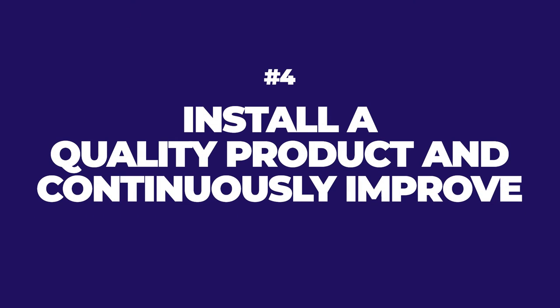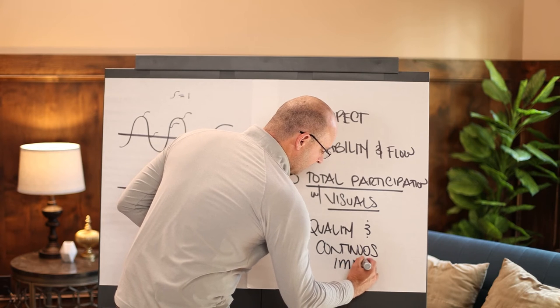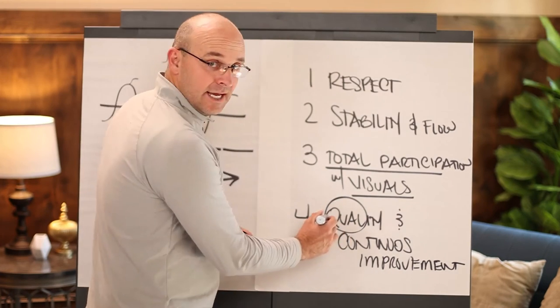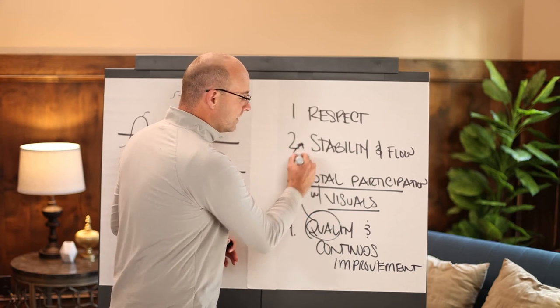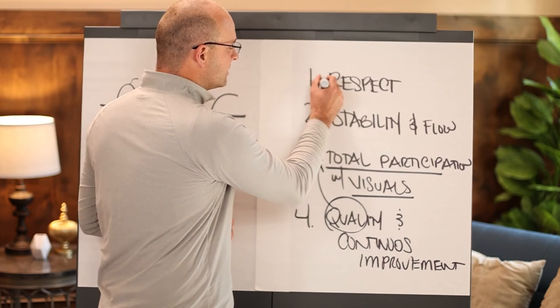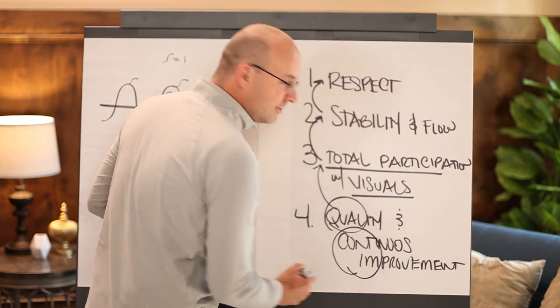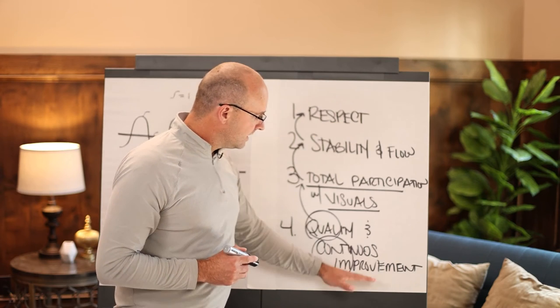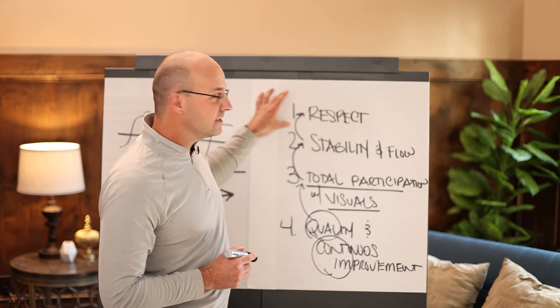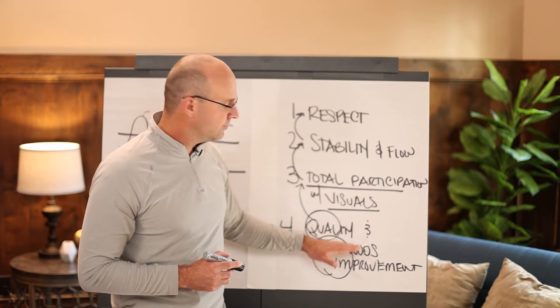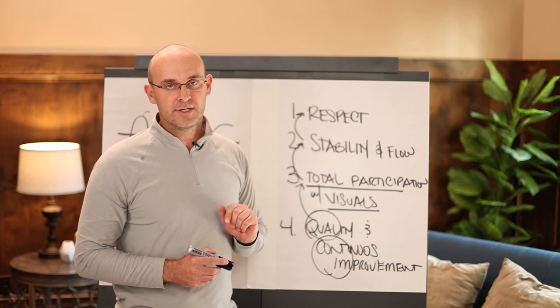We really want to engage with you. We want this to be a partnership. Number four is: that's when you can install a quality product and you can start to continuously improve. Continuous improvement can only happen when these other components are in place. Can you install a quality product if everyone's not doing it together? And can everyone do it together if there isn't a stable something to do together? And can we have a good system if it's not based on respect for people? If we don't have a quality product with total participation, stability, and respect, how can we continuously improve? You can't.